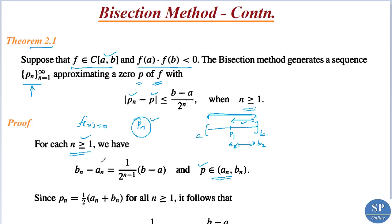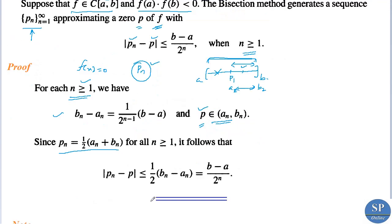In a similar way we can verify that this result is true for any n ≥ 1, and the actual root lies between an and bn because if we are ignoring one half, the root will be occurring in the other interval. Now, pn, the nth approximate root, is nothing but (an + bn) / 2 by the bisection method. For all n ≥ 1, |pn - p| ≤ (1/2)·(bn - an).